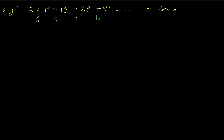But one thing we could observe is that the common difference between successive terms is forming an AP. The differences are: 11 minus 5 is 6, 19 minus 11 is 8, 29 minus 19 is 10. So the common difference is making an AP. If somehow we could use this fact, we can solve this question.